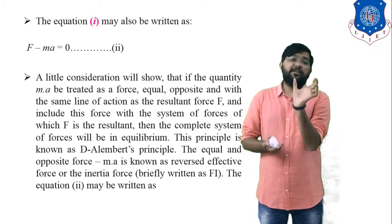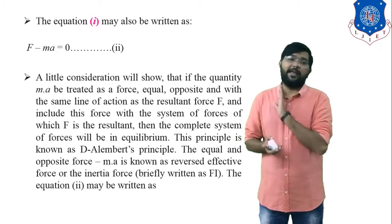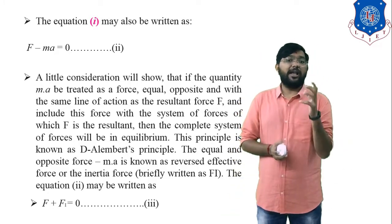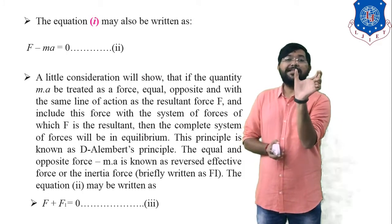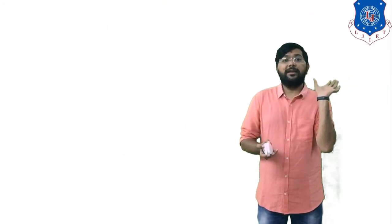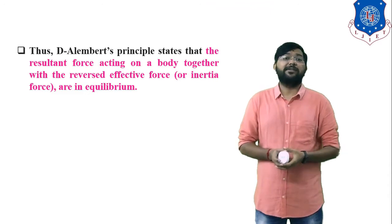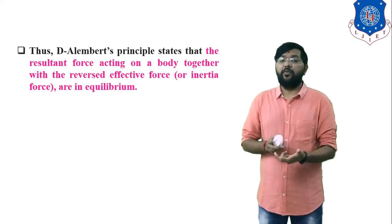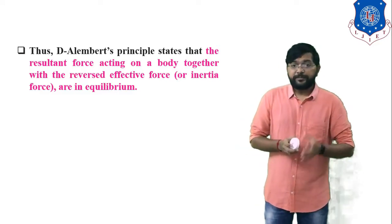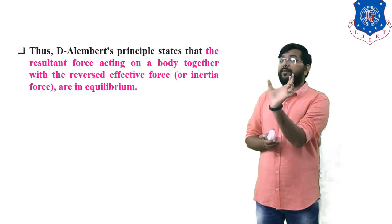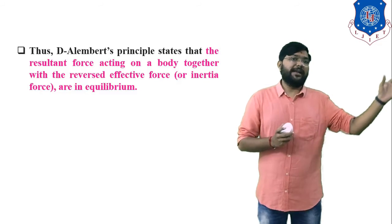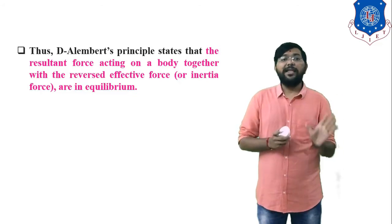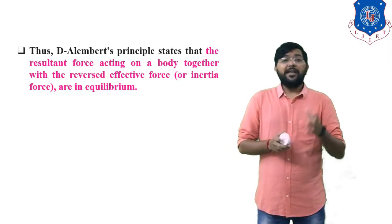Based on D'Alembert's Principle, the magnitude of the inertia force is −ma. The total force: force applied in the forward direction plus the inertia force in reverse direction equals zero. D'Alembert's Principle states that the resultant force acting on the body together with the reverse effective force (inertia force) are in equilibrium. If you add the resultant force ma and the inertia force −ma, the answer is zero, meaning the body is in equilibrium.